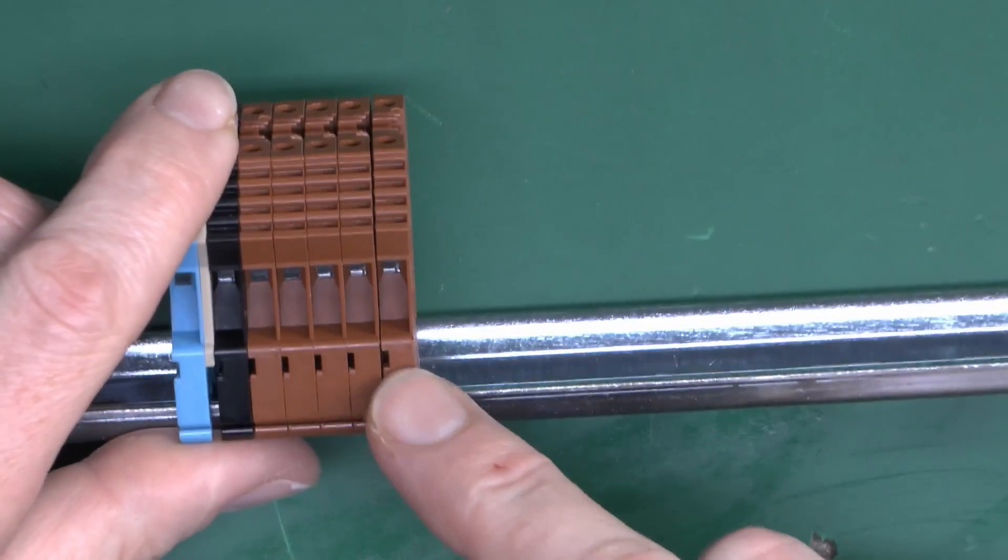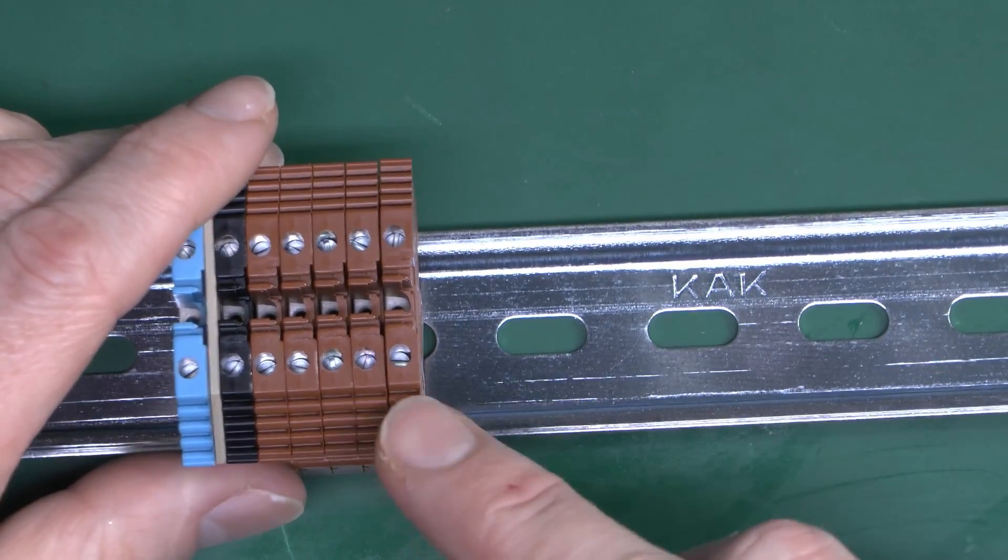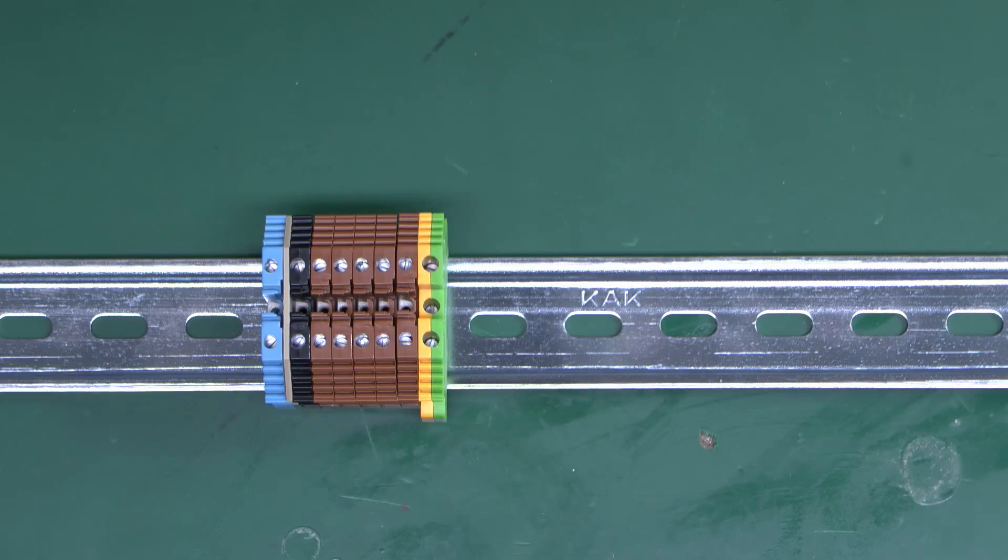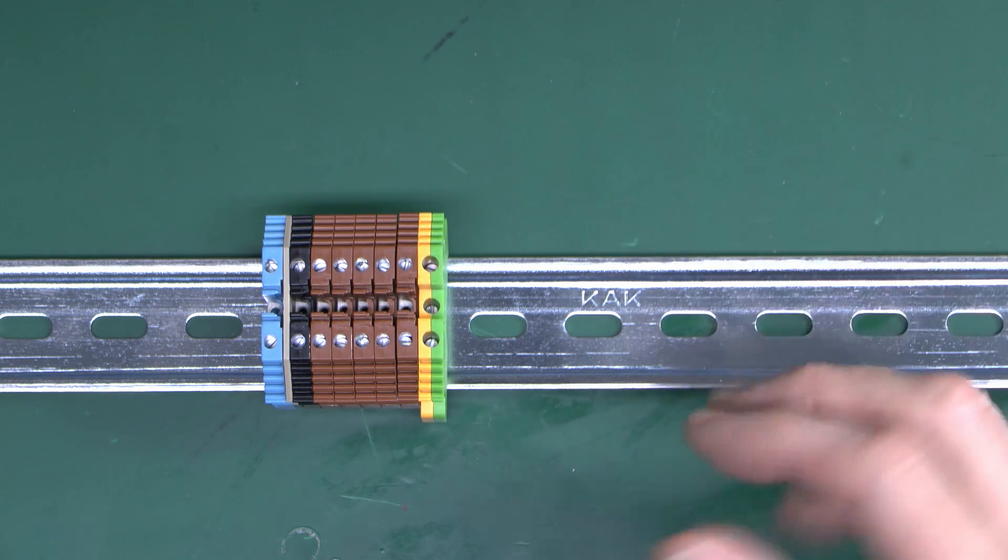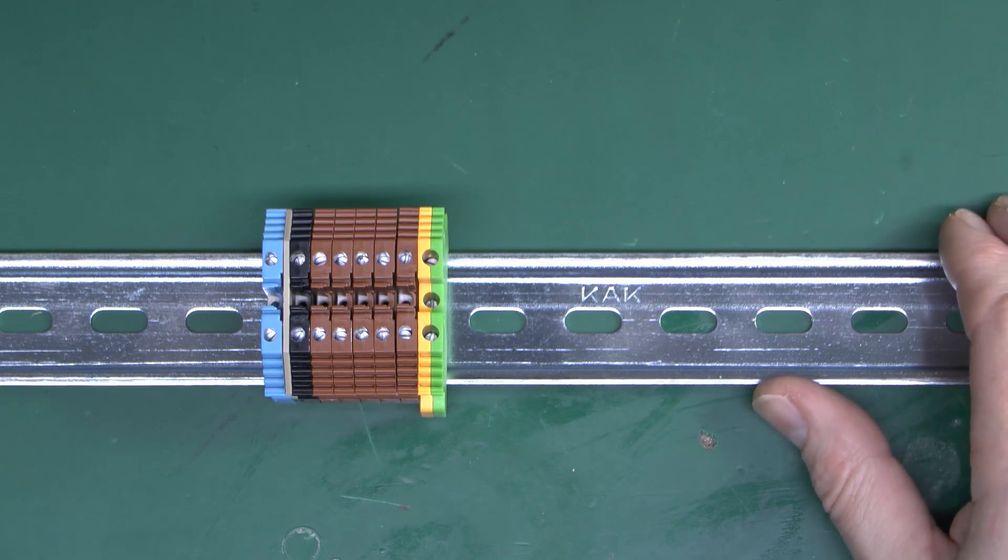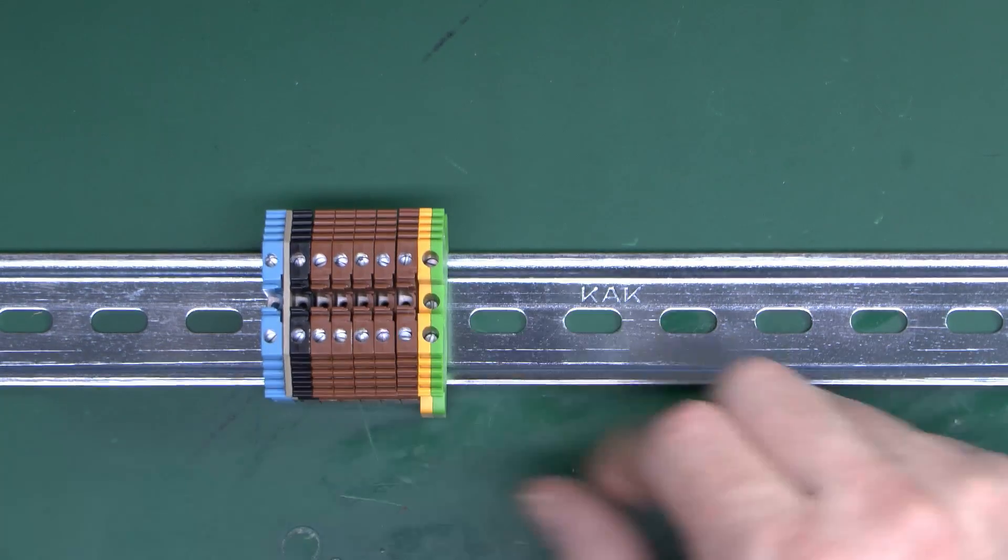Now these particular ones are 2.5mm wire. You can get them in a whole range of sizes. These are relatively small as these things go. You can get much bigger ones as well. Now this type of thing is normally used inside control cabinets and that sort of thing. Hence we're going to be using it for the phase converter. It did have some screw block terminals in there, but we got rid of those. We're going to be using these instead.